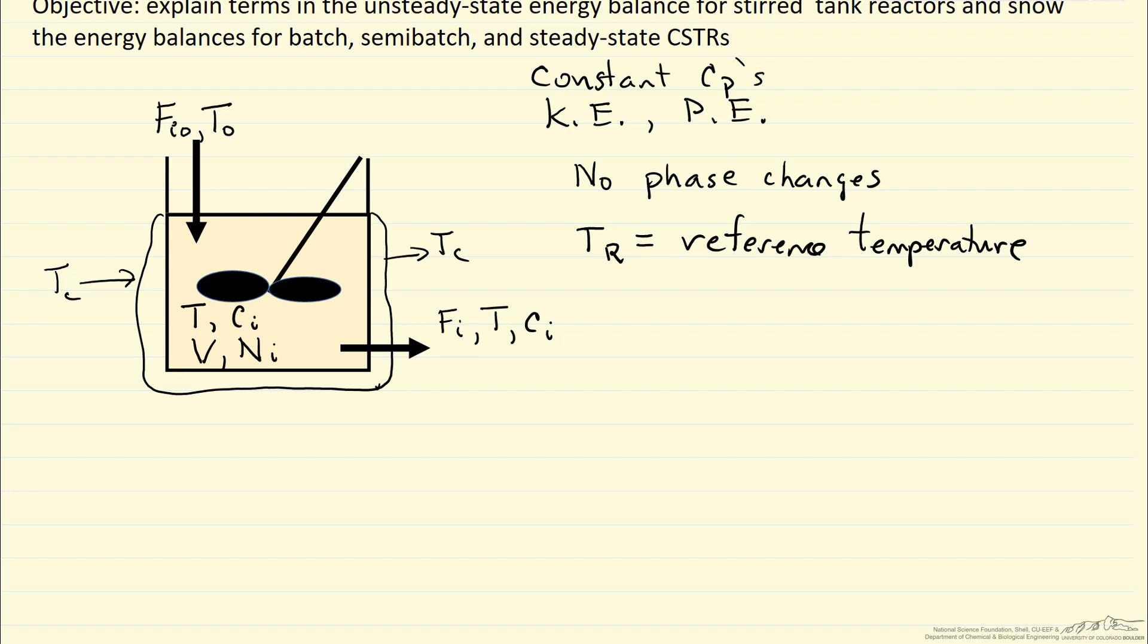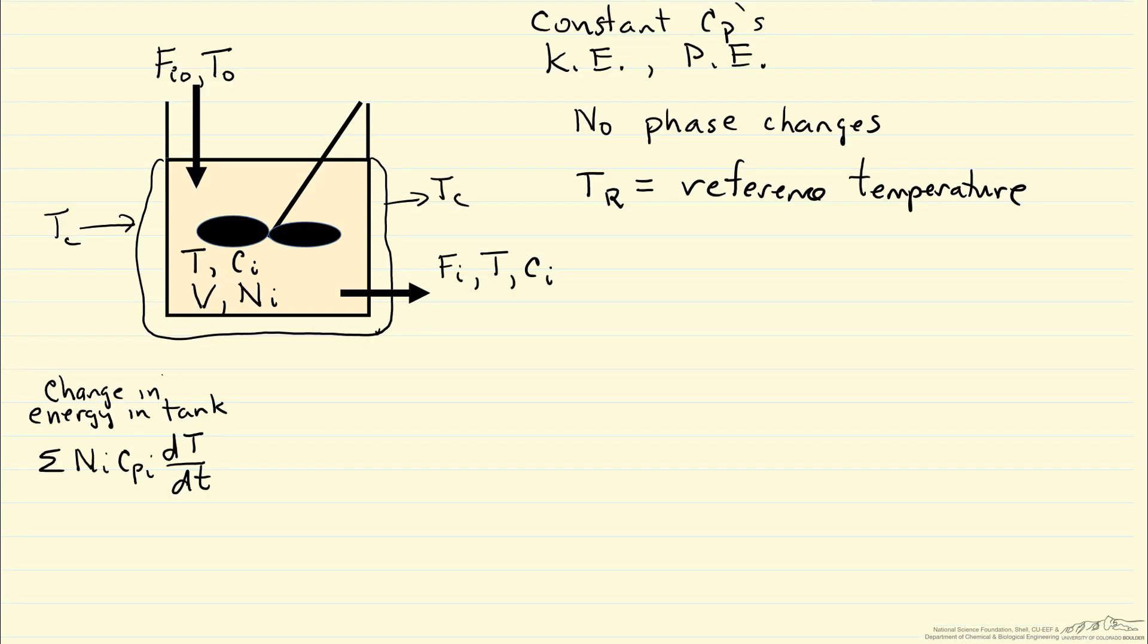Now if we look at the energy balance, the first term is a change in energy within the tank. So this is number of moles in the tank of each component, we're doing the summation of each component, times heat capacity, and this derivative of the temperature in the tank with time. Because we're looking at unsteady state systems, that temperature is going to change with time.